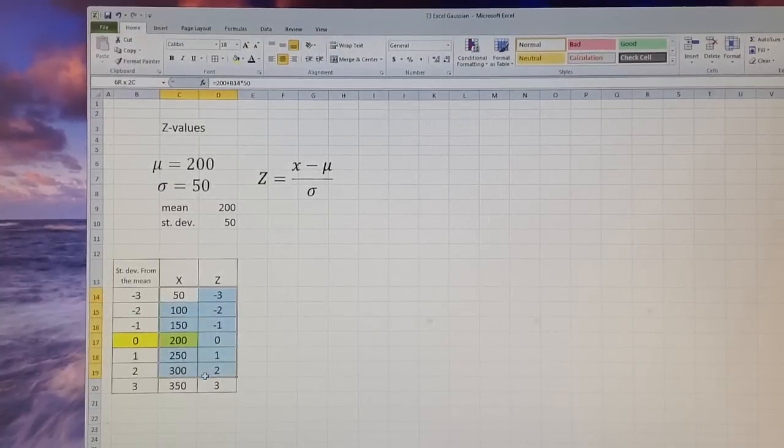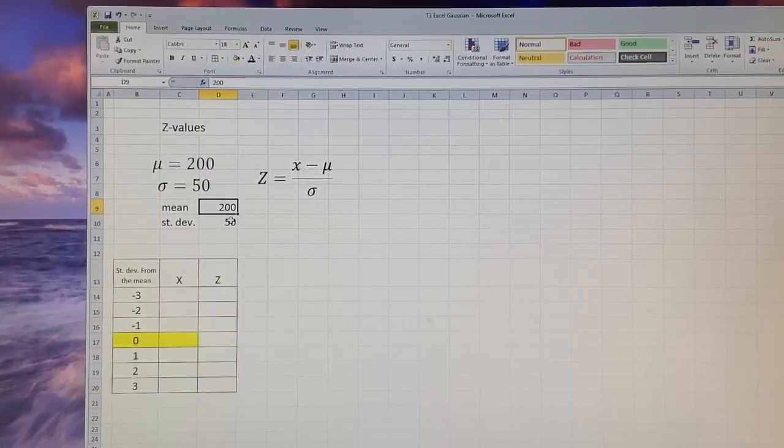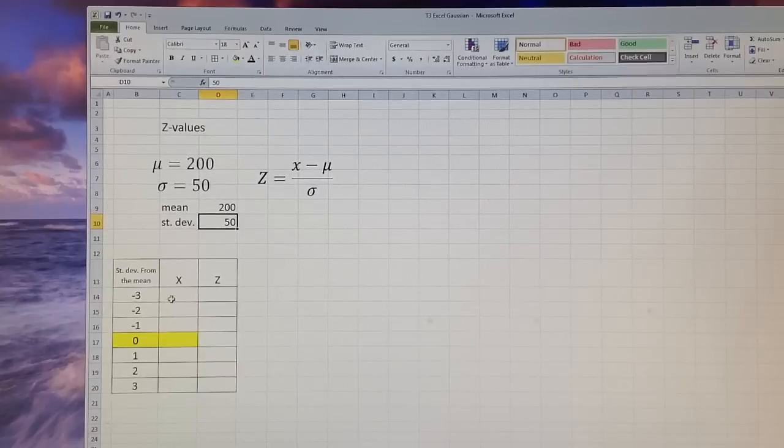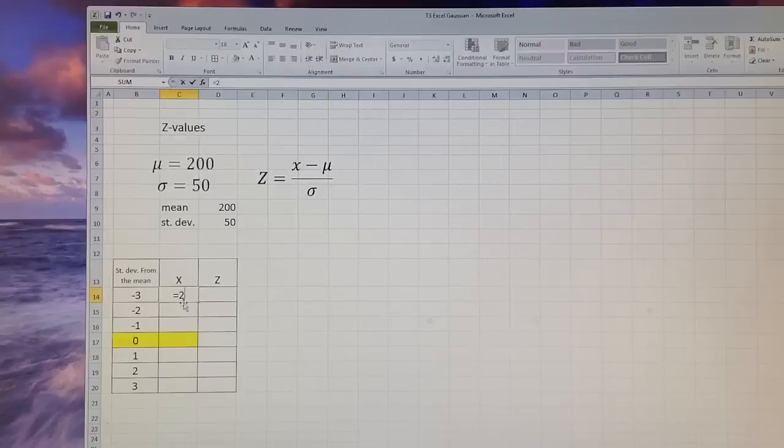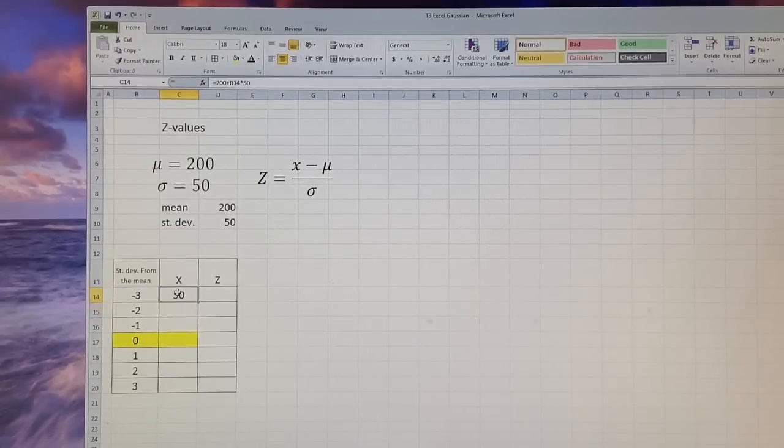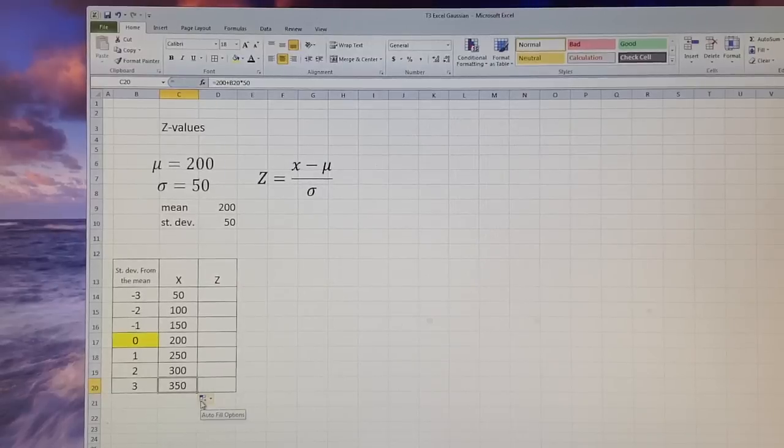I have here one example. Imagine that you have a variable with mean 200 and standard deviation 50, and you want to calculate x value 3 standard deviations less than the mean. So it would be 200 plus this negative 3 times 50, which is the standard deviation. So my value, which is in this case 3 standard deviations to the left, is 50. And 3 standard deviations more than the mean would be 3 times 50 is 150 plus 200 is 350.